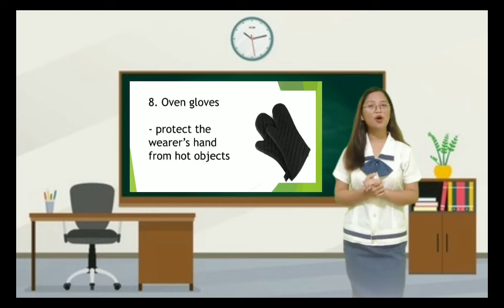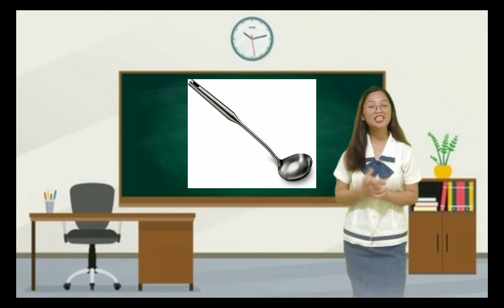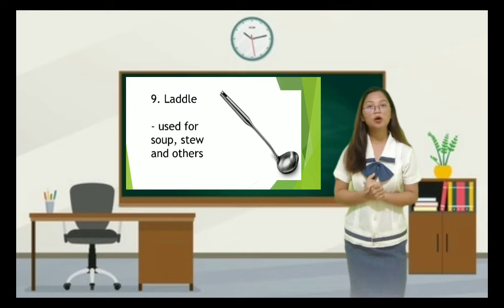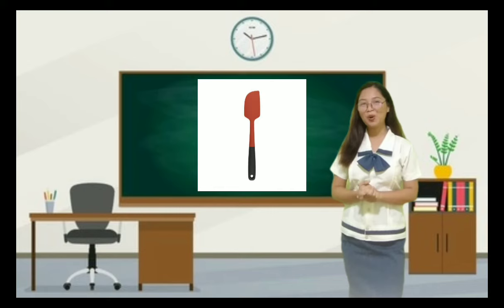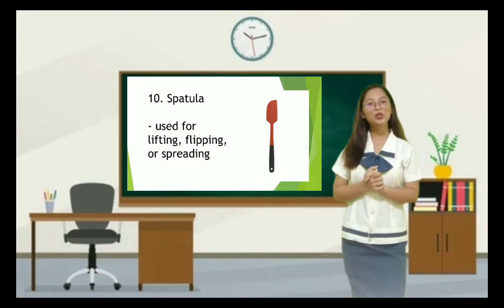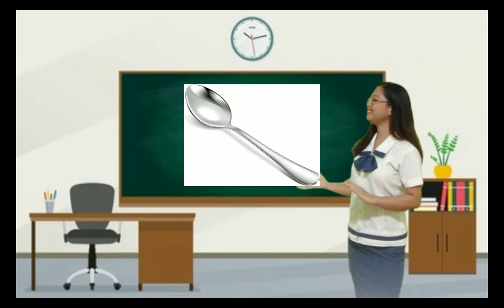Number nine — Angel, correct, this is a ladle. It is a type of spoon used for soup, stew, and others. Number ten — Rose, very good, it is a spatula, a handheld tool used for lifting, flipping, or spreading.